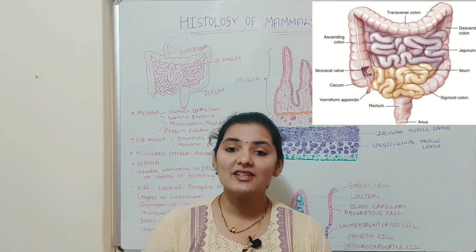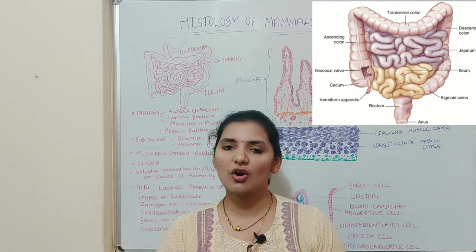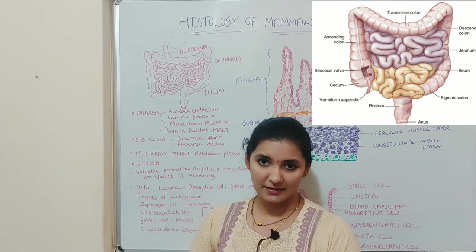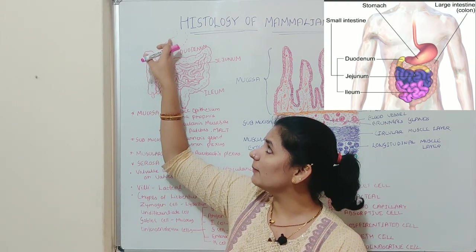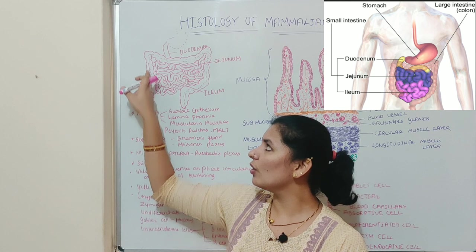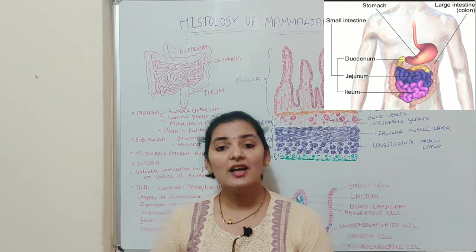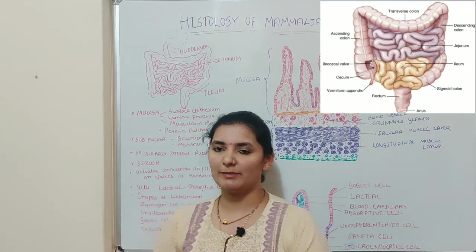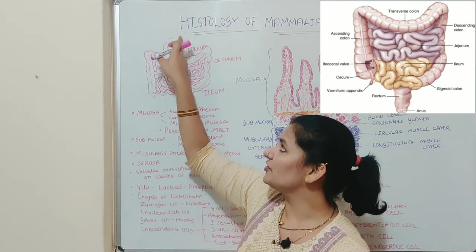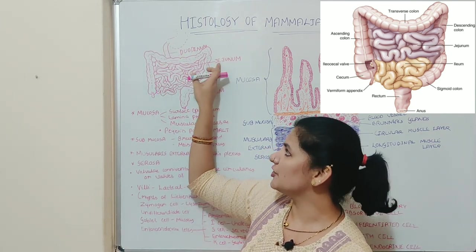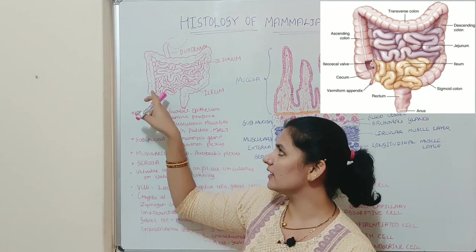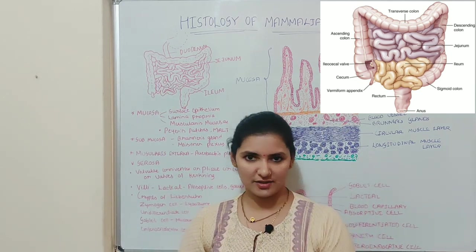As you all know, small intestine is a long coiled structure of about 5 meters in length. It extends between the pylorus part of the stomach to the colon of the large intestine. Small intestine has mainly three parts: the upper duodenum, into which the stomach opens; the middle jejunum; and the lower ileum, which opens into the colon of the large intestine.